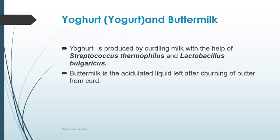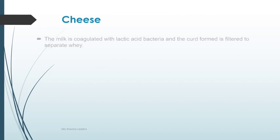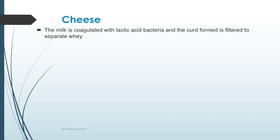Now let us talk about the most delicious product that children love — cheese. Milk is coagulated with lactic acid bacteria, and the curd formed is filtered to separate the whey. So basically we are first coagulating the milk, making the curd, and then separating the whey from it.